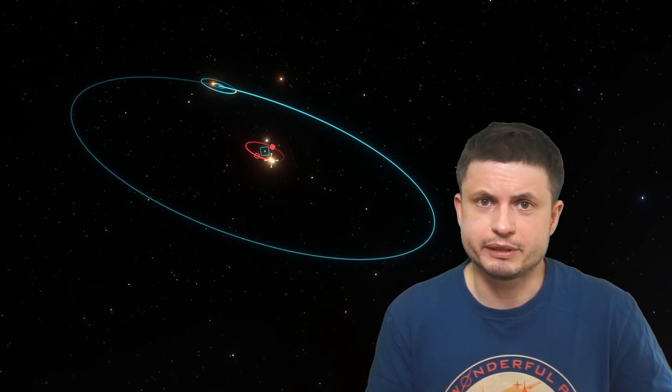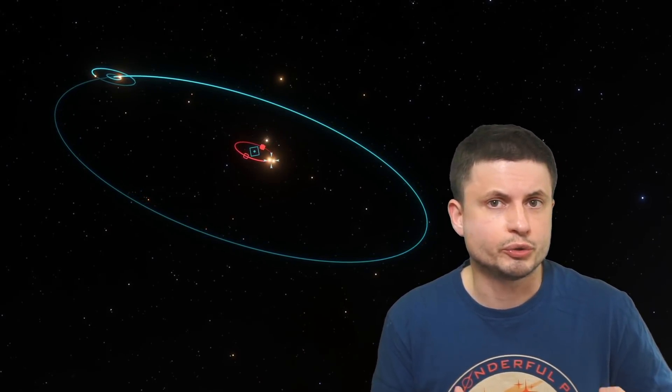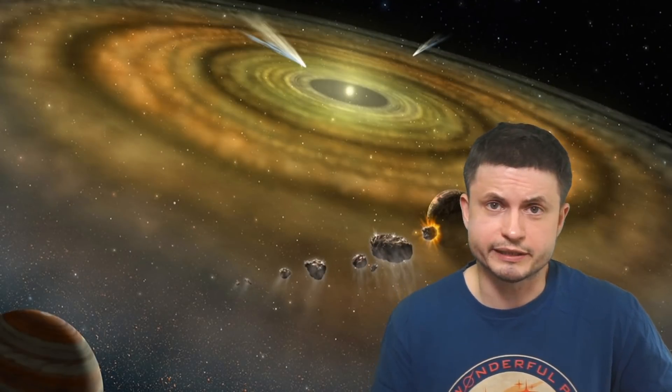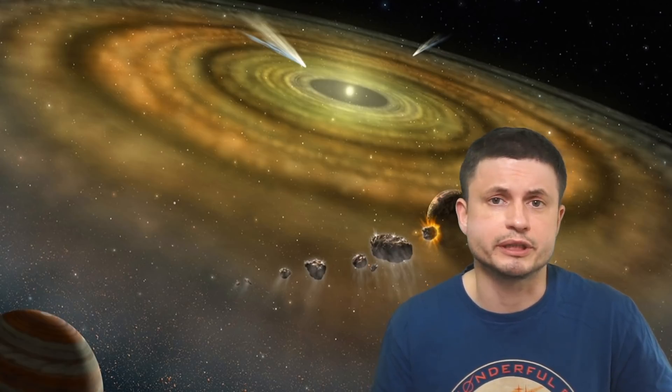A star system that's basically a binary star system that seems to possess not one, not two, but three protoplanetary disks. Disks similar to what you see right here that are most likely going to be creating their own planets sometime in the next few million or possibly several million years. But the fact that this star system seems to have three such disks is something we've never actually seen before. And so let's discuss this unusual star system in a little bit more detail and find out what the scientists have learned about it in the last 30 years.